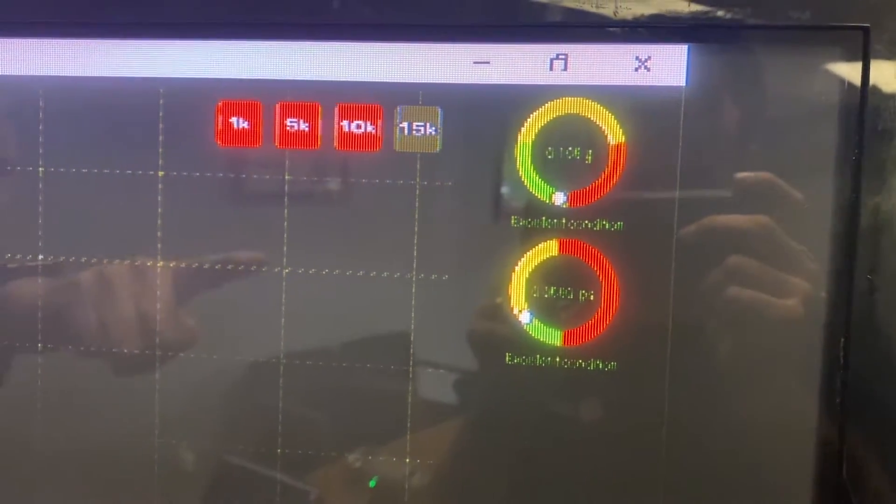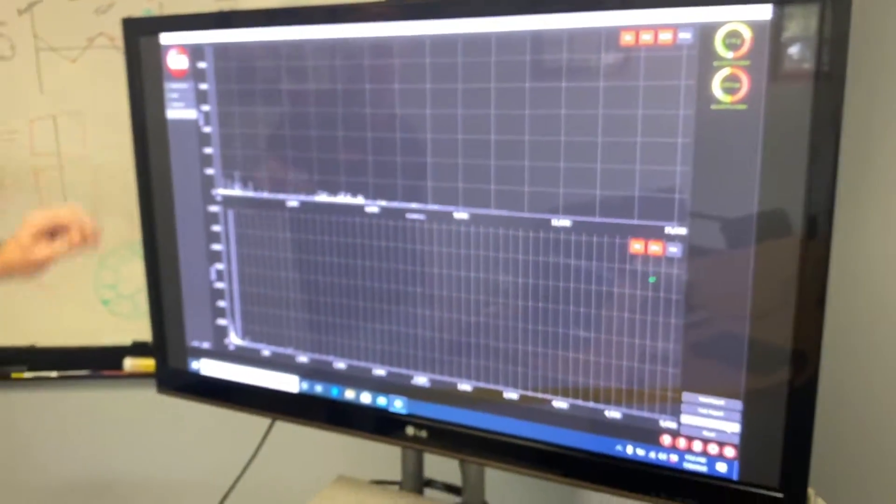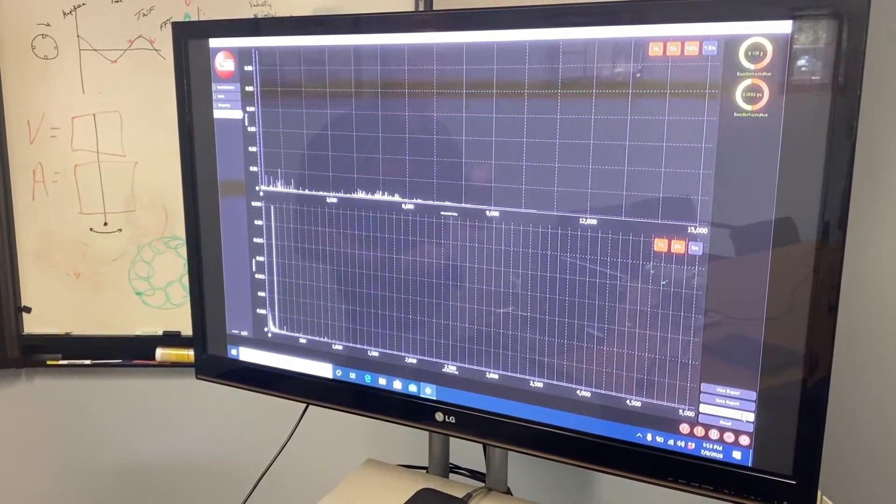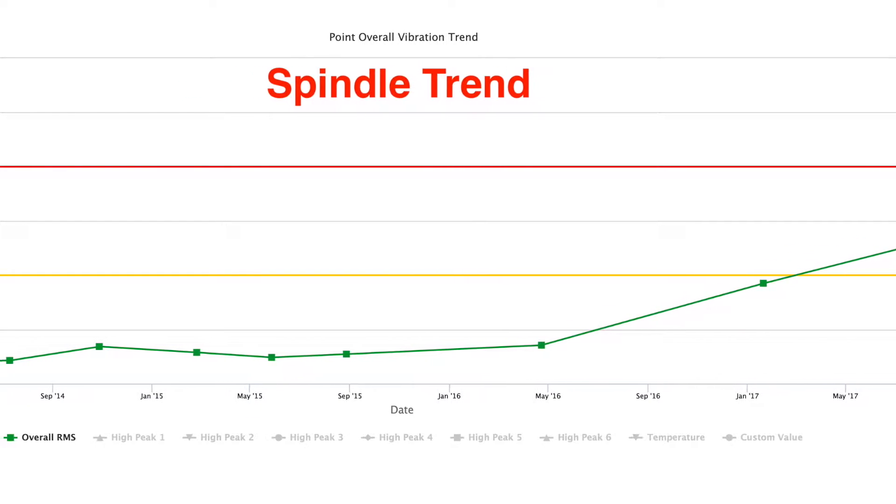And of course the bearings aren't hurt at all so those are in green as well and we get a good report. Now this will go up to the web app every time we hit the button and it will start trending the health of this spindle or asset.